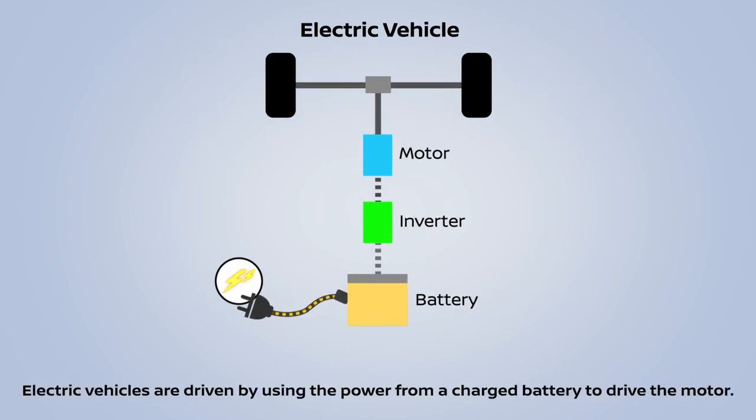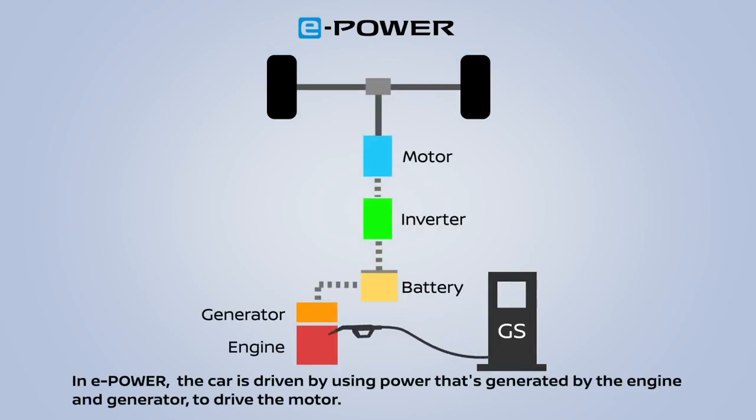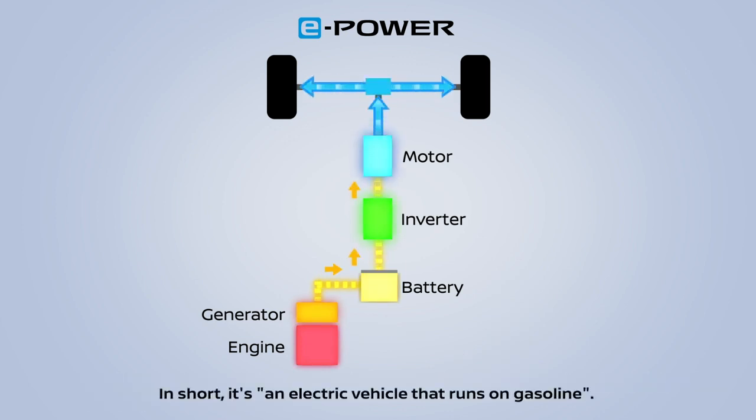Electric vehicles are driven by using the power from a charged battery to drive the motor. In e-Power, the car is driven by using power that's generated by the engine and generator to drive the motor. In short, it's an electric vehicle that runs on gasoline.